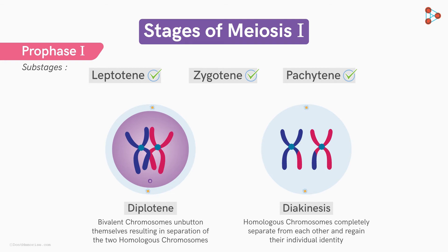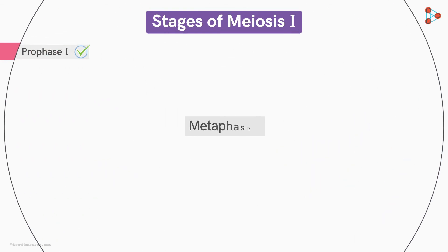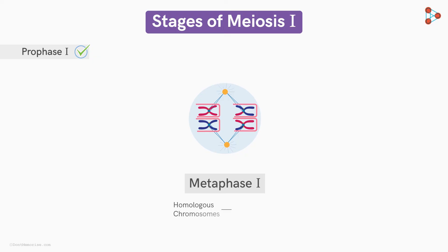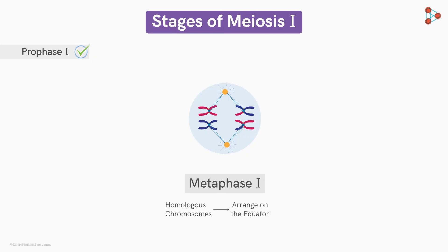Let's move ahead to the next stage of meiosis I: metaphase I. The homolog pairs align on the equator of the cell with random orientation. This arrangement is called the metaphase plate and is a result of independent assortment.